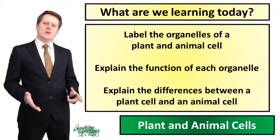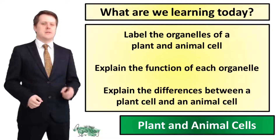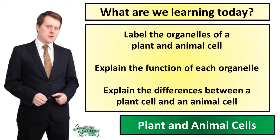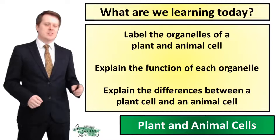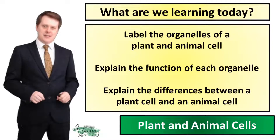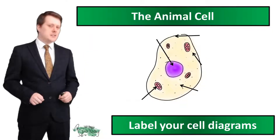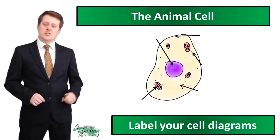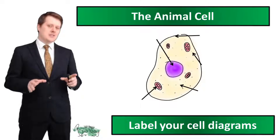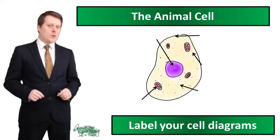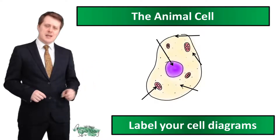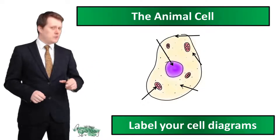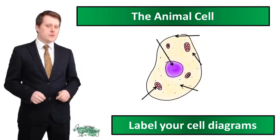In today's lesson we are going to be looking at the organelles in a plant and an animal cell. We are also going to explain the function of each of these organelles and explain the differences between a plant cell and an animal cell. For our first task we're going to need the worksheet. I'm going to talk to you about the organelles which are contained within the animal cell and as I go through it I would like to label these organelles on your worksheet. If you haven't got a worksheet, pause the video, sketch this animal cell and once you've finished unpause the video and then we can go through the labelling together.